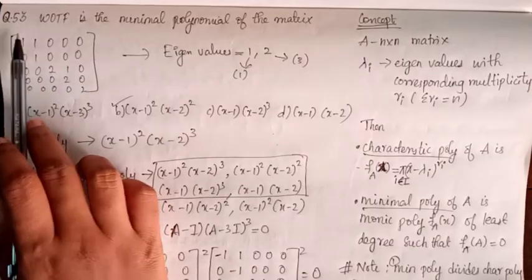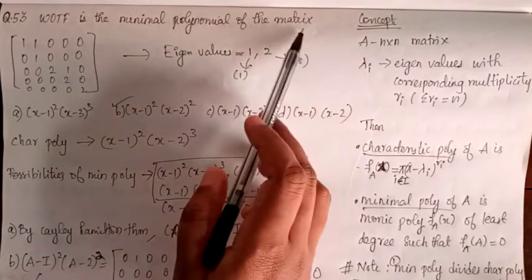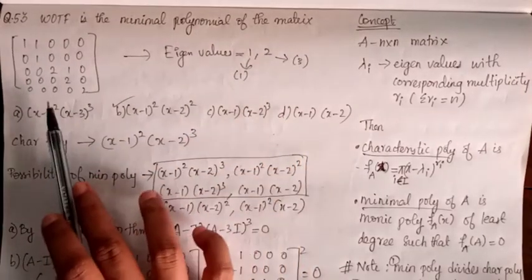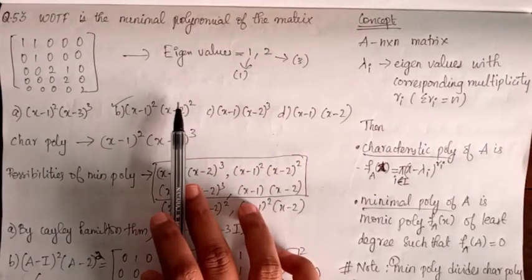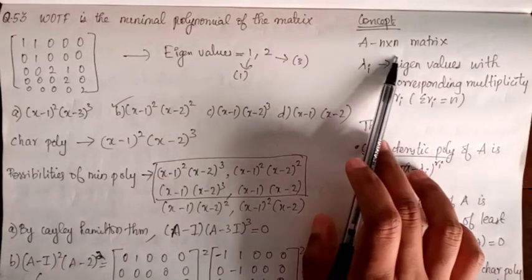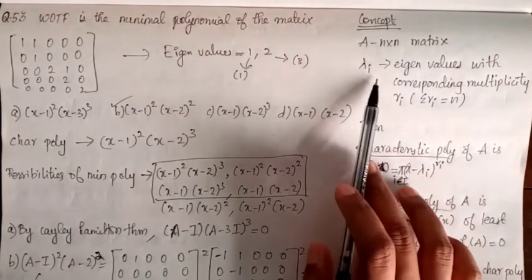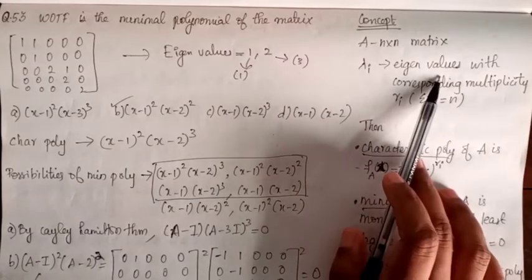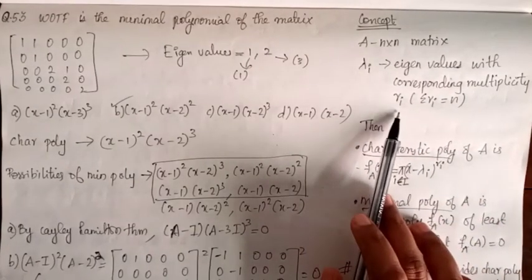Next, question 53: Which of the following is the minimal polynomial of the matrix? For an n×n matrix, lambda is an eigenvalue with corresponding multiplicity r_i, such that the sum of r_i equals n.